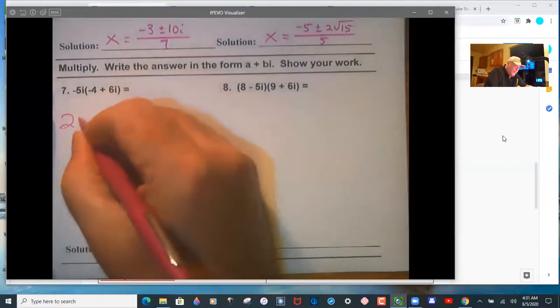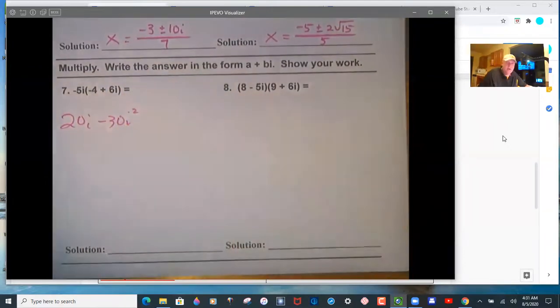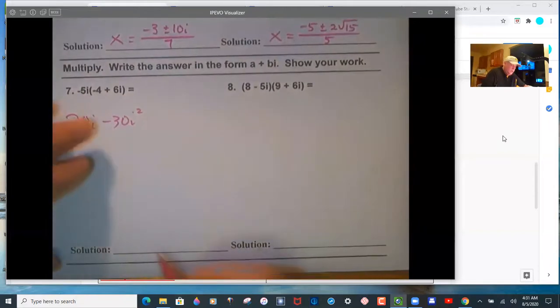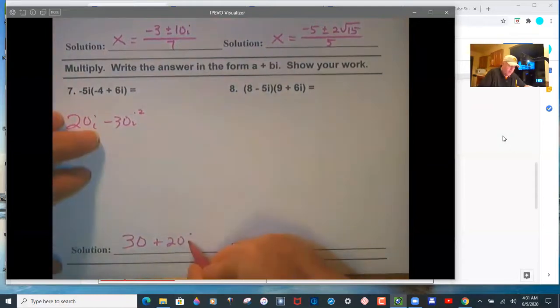Okay, so 20i minus 30i squared. And remember, i squared just means change the sign in the number because it equals negative 1.